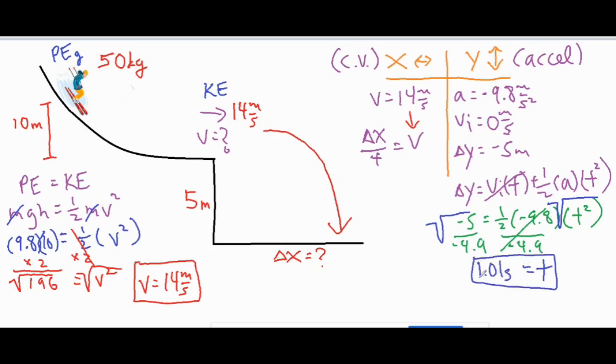We get a time of 1.01 seconds, which we can move to the X column since time doesn't have a direction. Then delta X over 1.01 equals 14. Cross multiplying gives us our final delta X value: 14.14 meters.